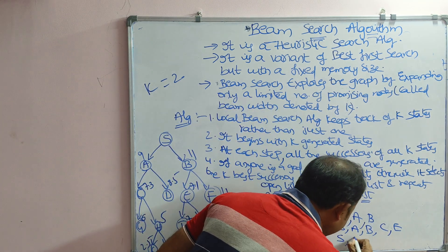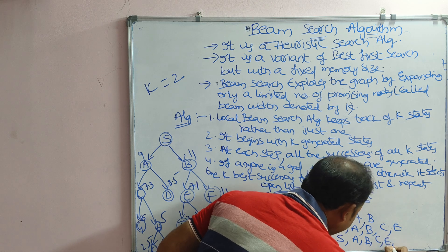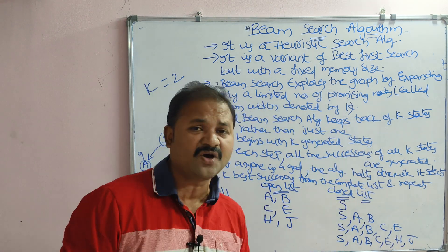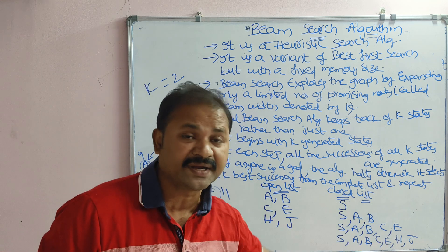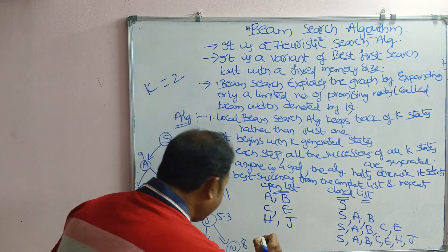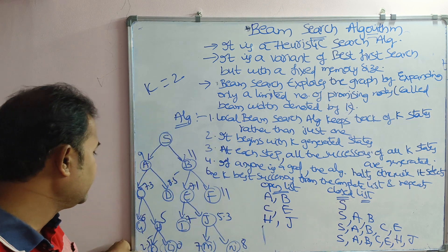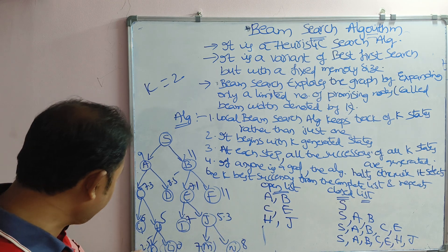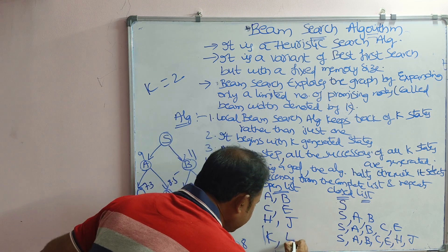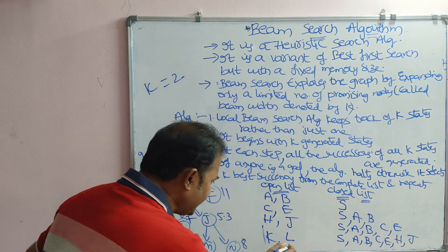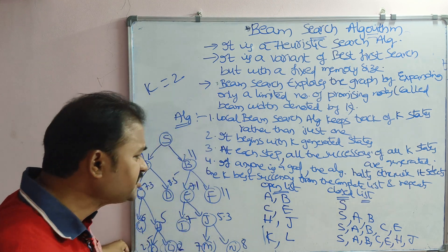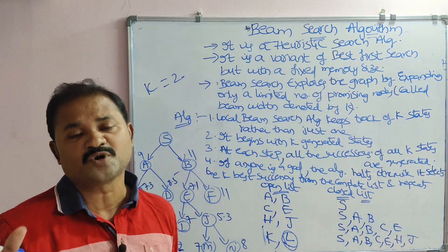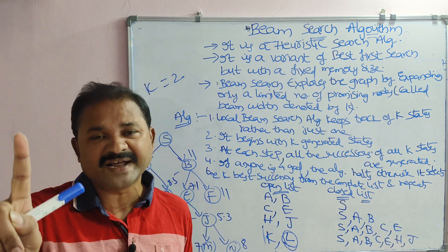The closed list now contains S, A, B, C, and E. H and J are placed in the open list. We generate the successors of H and J: H's successors are K and L, and J's successors are M and N. Out of these four values the two best are K (2.5) and L (0). Since L has heuristic value 0, L is the goal node, so we have found the goal and the process terminates.